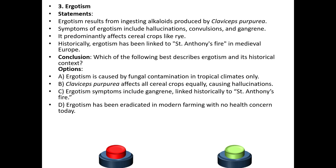Third question: Ergotism. Statements: Ergotism results from ingesting alkaloids produced by Claviceps purpurea. Symptoms of ergotism include hallucinations, convulsions, and gangrene. It predominantly affects cereal crops like rye. Historically, ergotism has been linked to Saint Anthony's fire in medieval Europe.